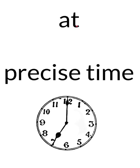At — for precise time, like seven o'clock. We have to say at seven o'clock. ضمير at حق الوقت المحدد — مثل الساعة، ما اقول الساعة سبع، اقول at seven o'clock، at half past one.